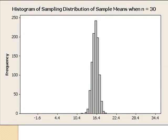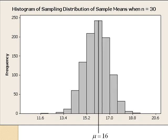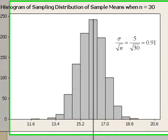Here is that histogram. This histogram displays the 1,000 sample means of size 30. Now I will adjust the x-axis for us to zoom in on the sampling distribution. Pause here to calculate the standard deviation of the sampling distribution. This quantity is 0.91, as we can see here.